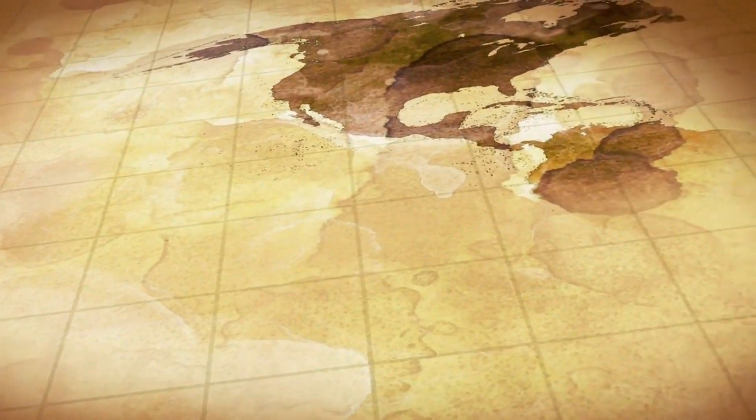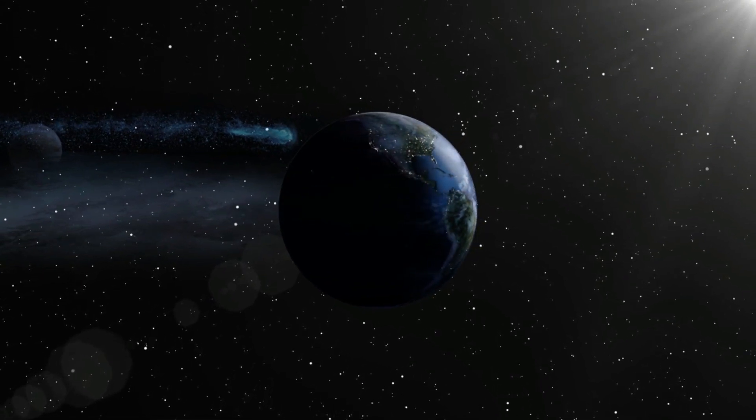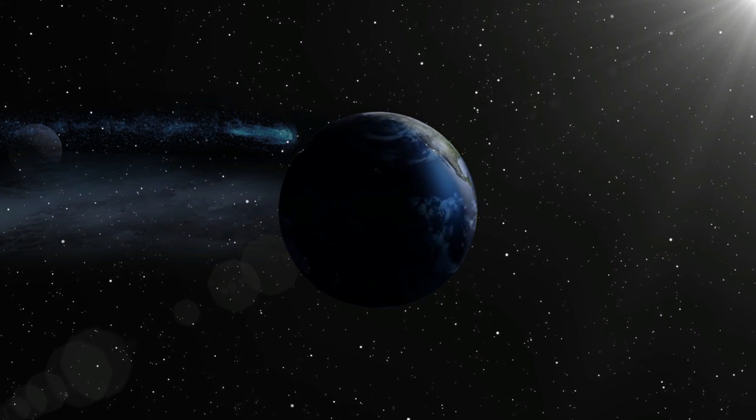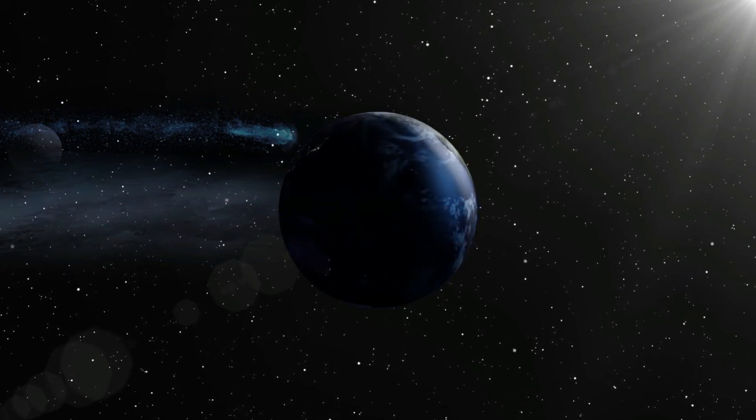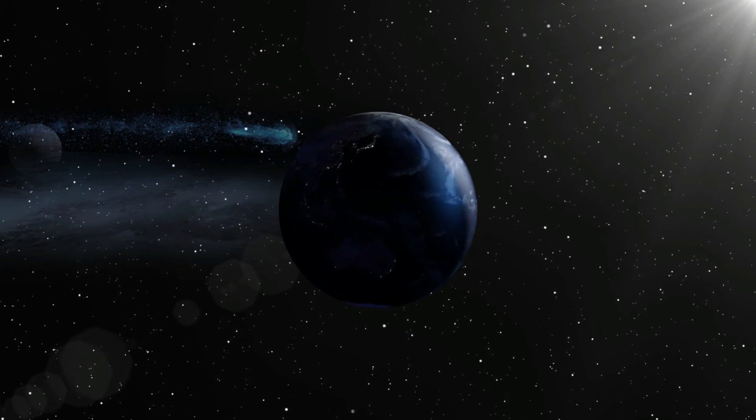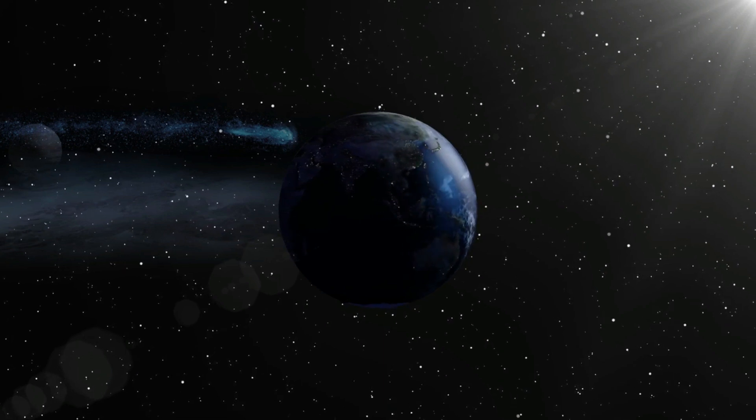Although currently 11 light years from Earth, the new planet's parent star Ross 128 is moving towards us and is expected to overtake Proxima Centauri as our nearest stellar neighbor in just 79,000 years, a heartbeat on cosmic timescales.